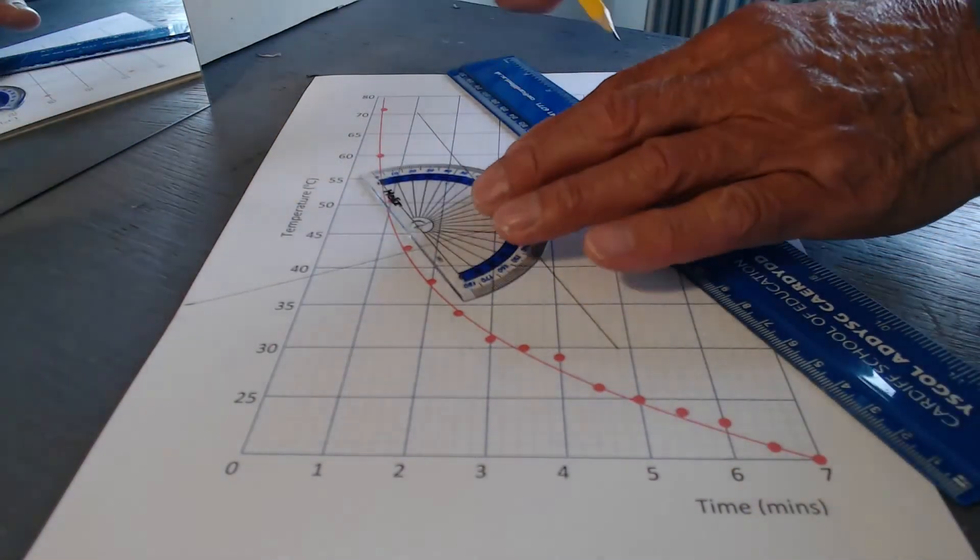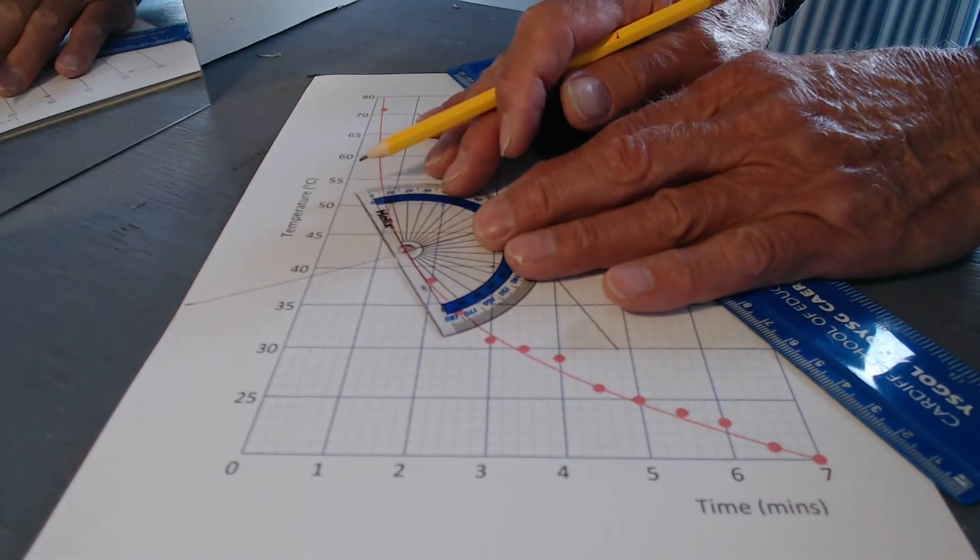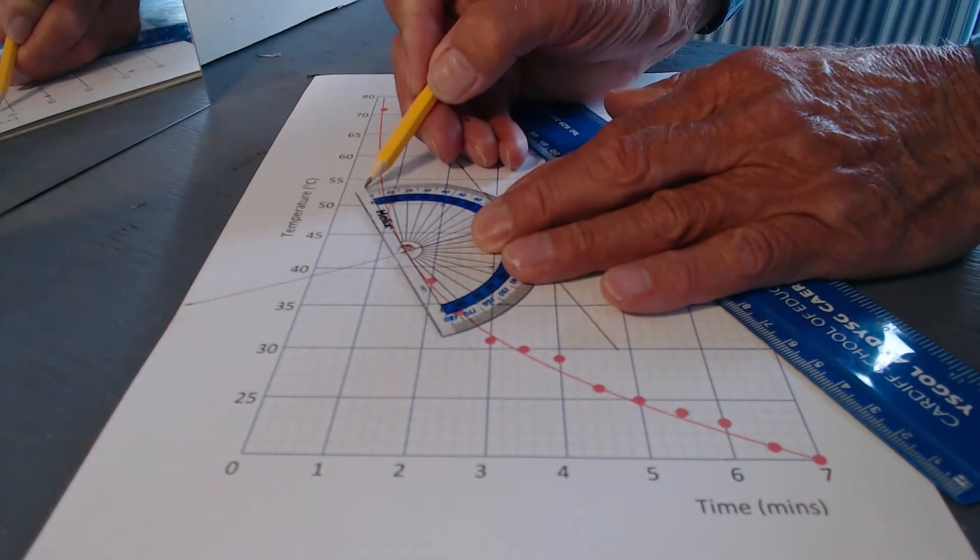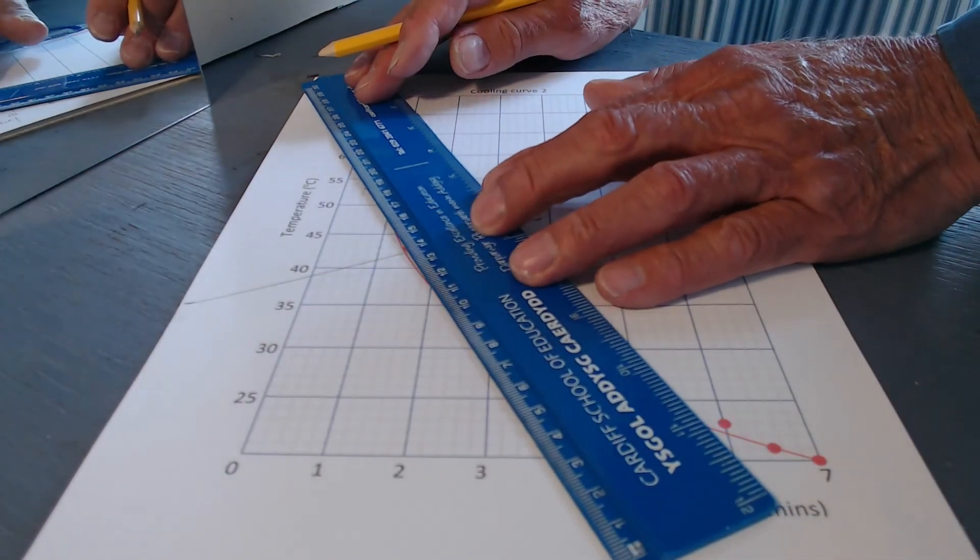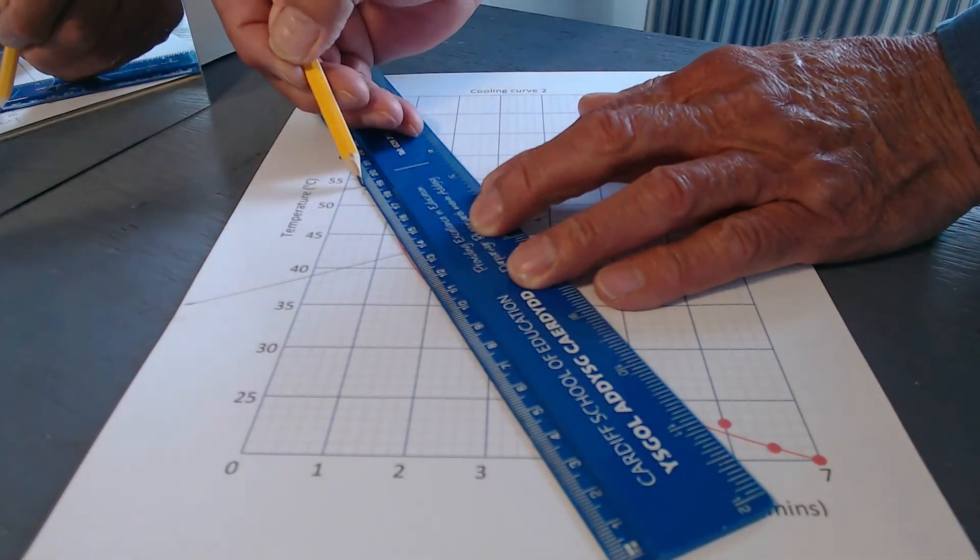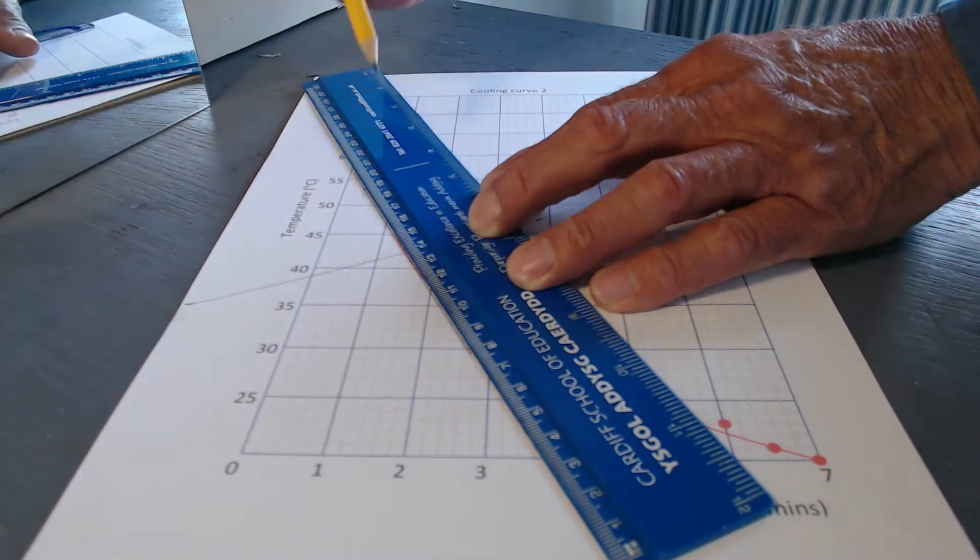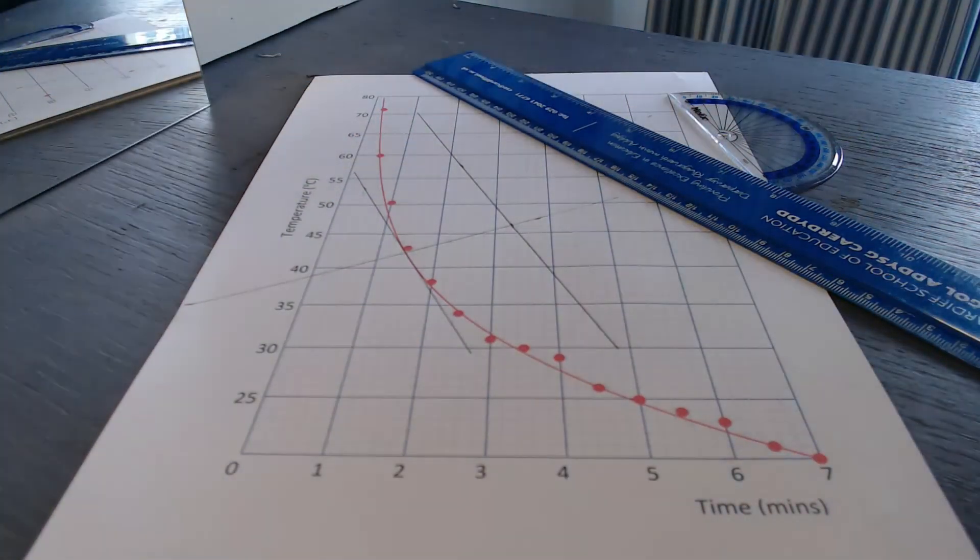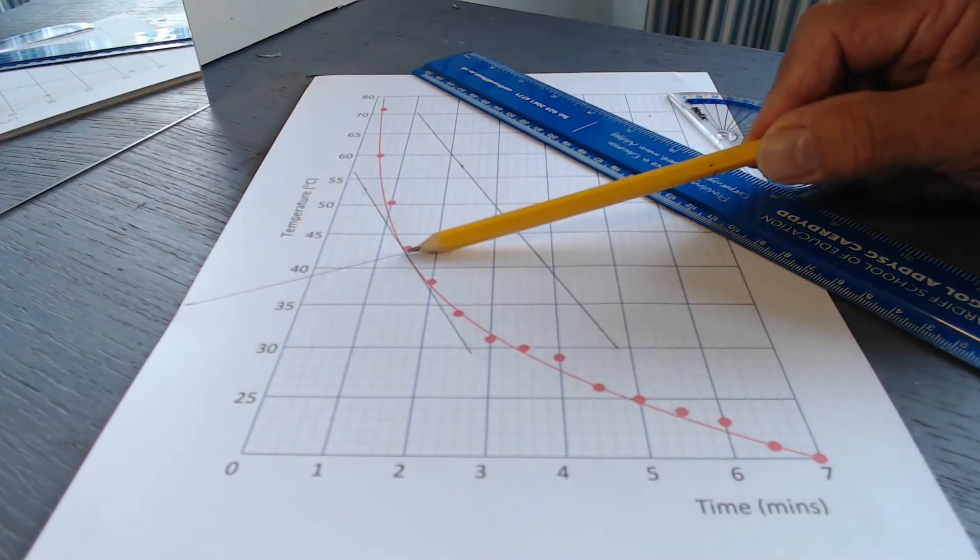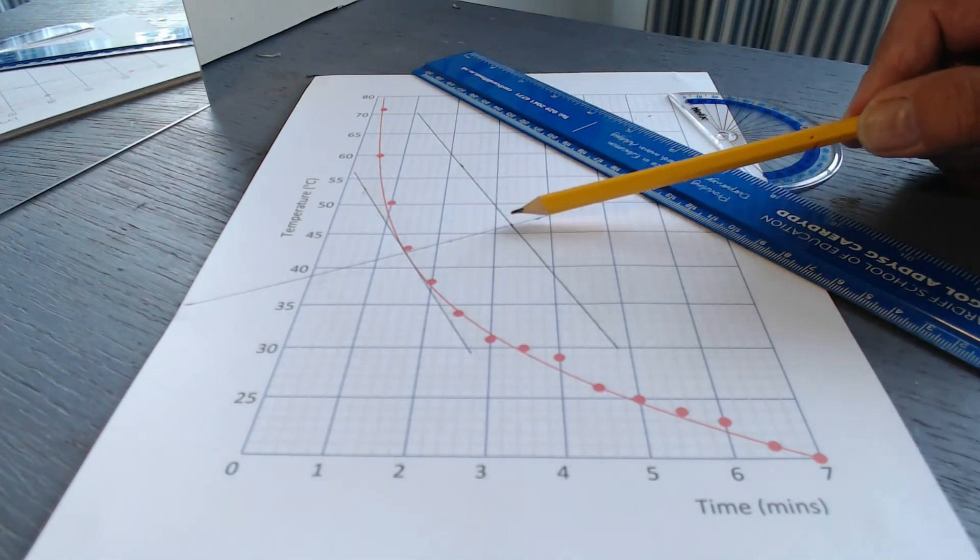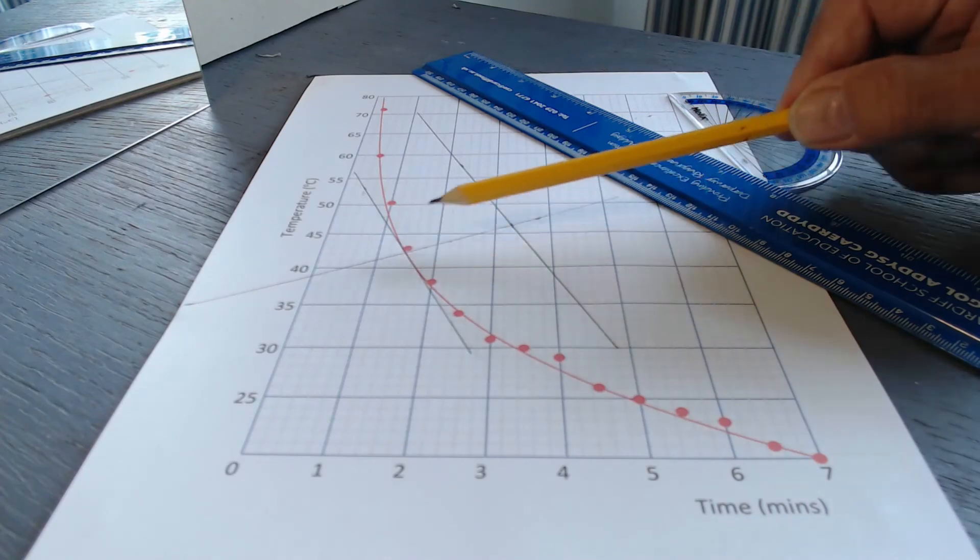Just to prove that to you, if we put another line there, actually at the edge of the curve, you see these two lines are parallel. It's sometimes easier to draw one out here away from the curve itself. But believe me, that line and that line are parallel.